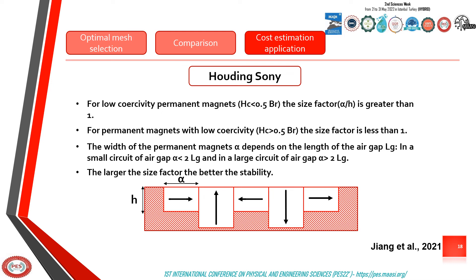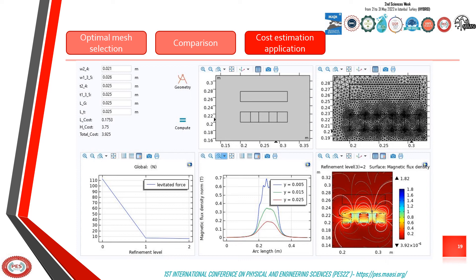This application also allows visualizing the system's geometry, its mesh, the magnetic flux density at different heights, and levitation force according to the adapted mesh levels. The primary purpose of this application is to decrease the cost of the system according to the demand, namely the magnetic flux density and levitation force.